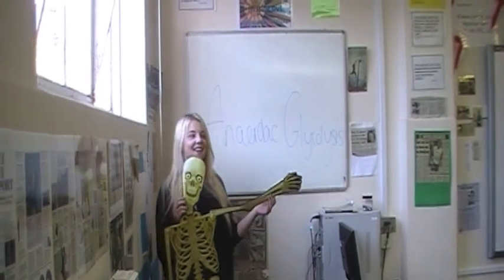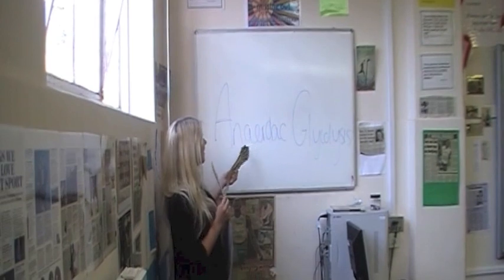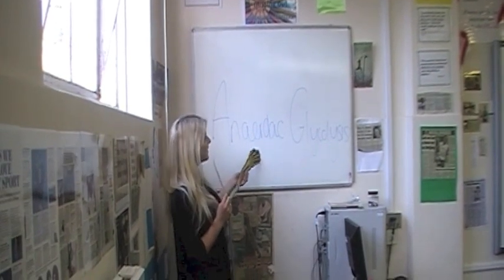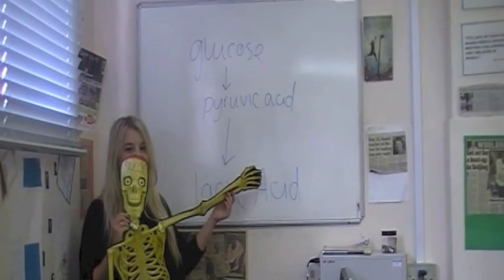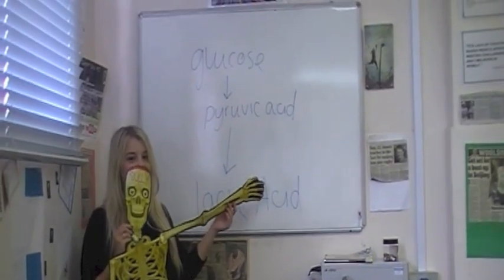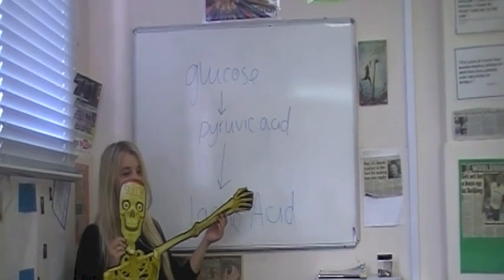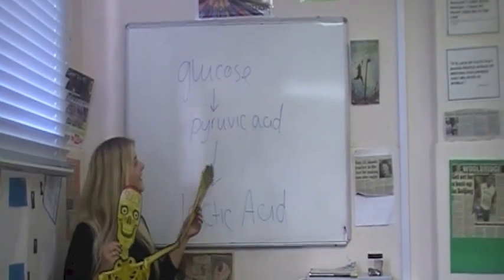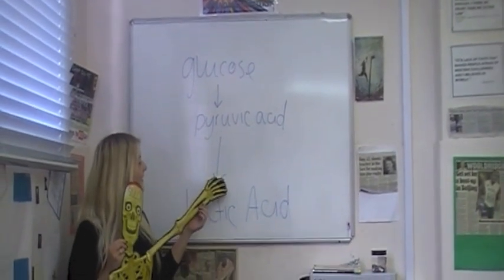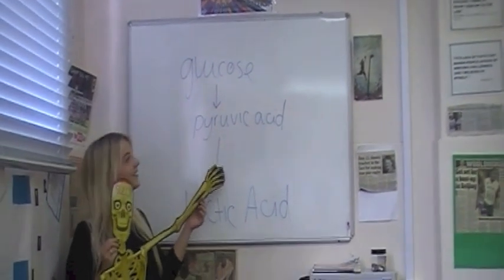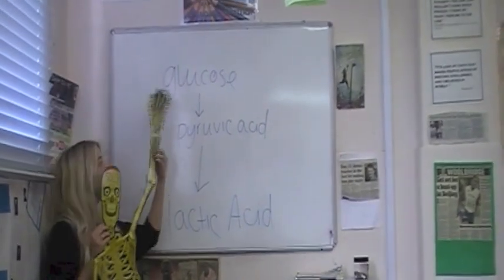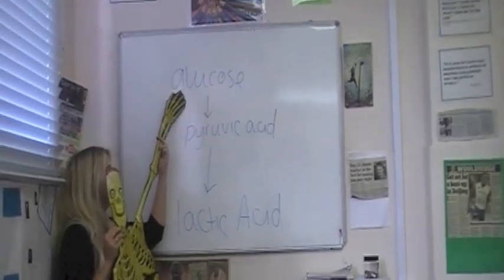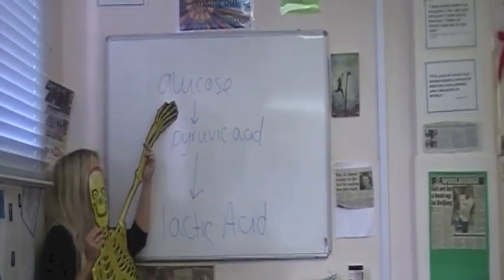Today we are going to talk about anaerobic glycolysis. Anaerobic glycolysis occurs during high intensity activity that lasts for longer than eight to ten seconds. Glycogen is broken down by enzyme activity into pyruvic acid.